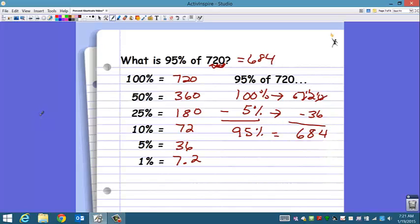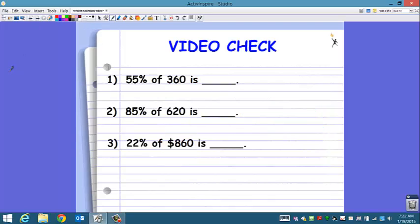This is what you're going to be doing on your homework. Sometimes it's as easy as some questions are just finding 10% and 1%. So you just move that decimal point, put down your answer. And some of them you're going to be finding different percent amounts where you're going to have to use the benchmark percents to help you find those amounts. But before you get to that, you need to go ahead and complete the video check.